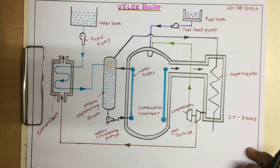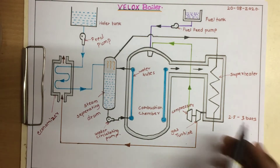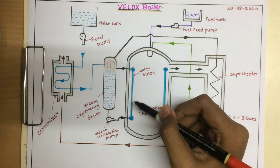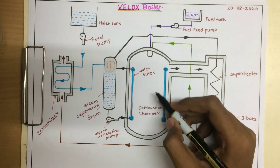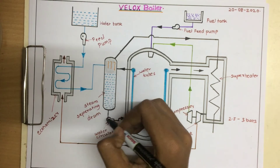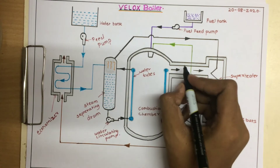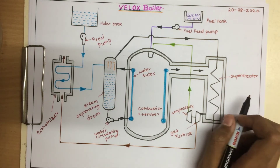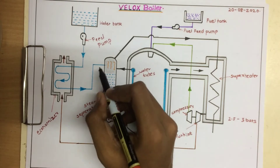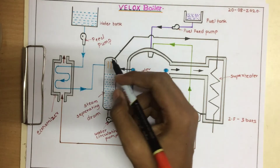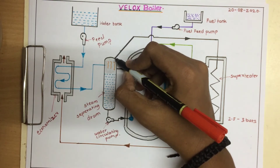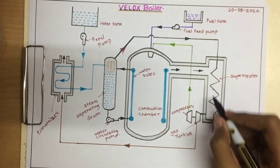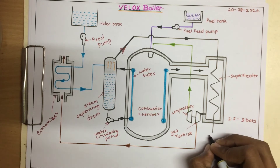The heat transfer rate also increases. Flue gases are produced in this system, by which water is converted into steam. This steam is stored in the steam separating drum. The flue gases then flow towards the superheater, where the saturated steam is passed in, superheated, and given to further use.